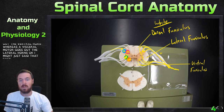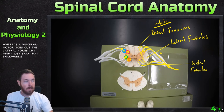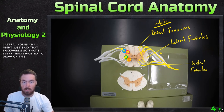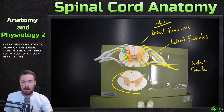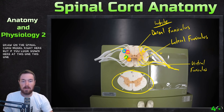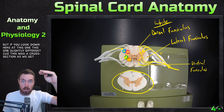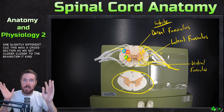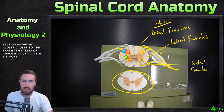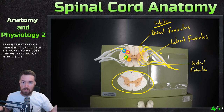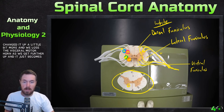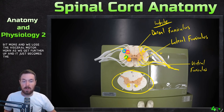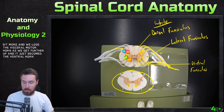Sorry, I might have said that backwards. That's everything I wanted to draw on the spinal cord model. But this lower one is slightly different because it's a cross section — as we get closer to the brain stem, it kind of changes its shape and we lose the visceral motor horn, and it just becomes the ventral horn. We'll talk about that more in the lecture portion.